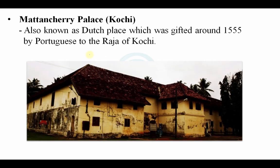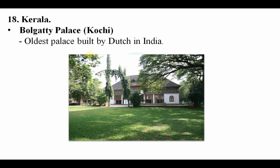Now Kerala. First is Bolgatty Palace — it is in Kochi and is known as the oldest palace built by the Dutch in India. Many European companies came to India for business: Portuguese, Dutch, English, French. Bolgatty Palace was built by the Dutch from the Netherlands and is in Kochi.